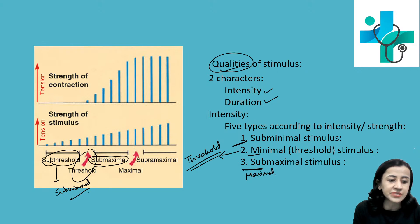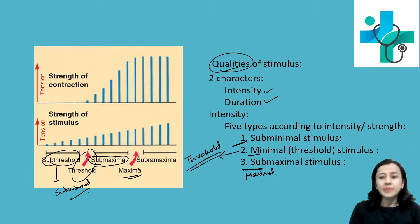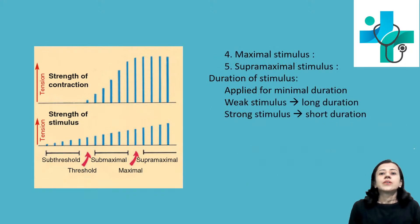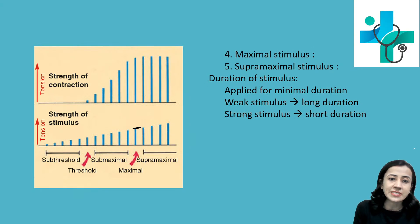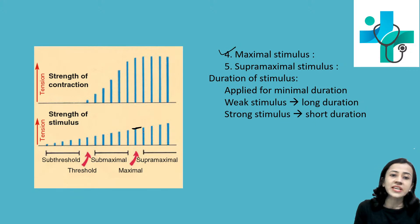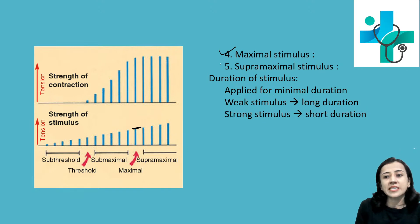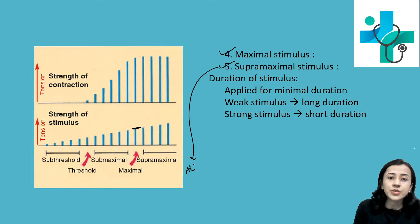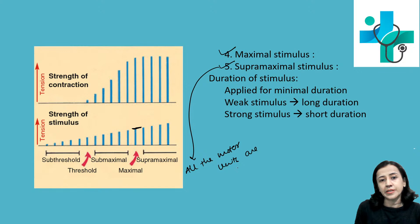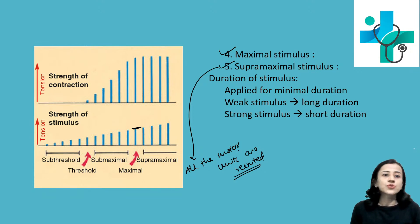Gradually increasing the strength of stimulus, we reach maximal stimulus — that is the stimulus which produces the highest, maximum response. Supramaximal stimulus is more than maximal. If we increase the strength above maximal, the response cannot be increased because all the motor units of the muscle are recruited — no more motor units are left to increase the response.